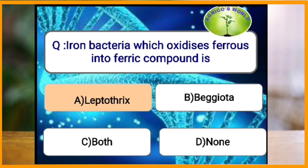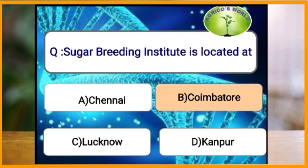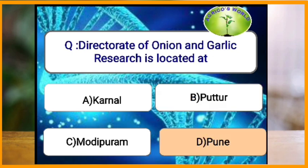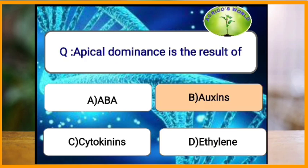The iron bacteria which oxidizes ferrous to ferric compounds is Leptothrix. The sugarcane breeding institute is located at Coimbatore. The directorate of onion and garlic research is located at Nasik in Pune. Auxins are responsible for apical dominance in plants.